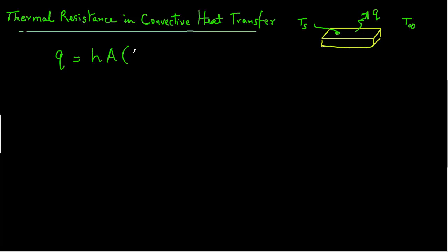times the area A times Ts minus T infinity, where Ts is the surface temperature of an object and T infinity is some bulk temperature of the fluid that surrounds that object.